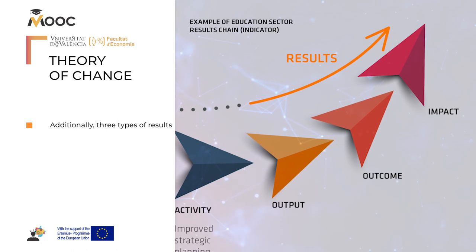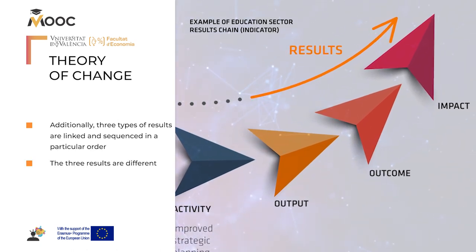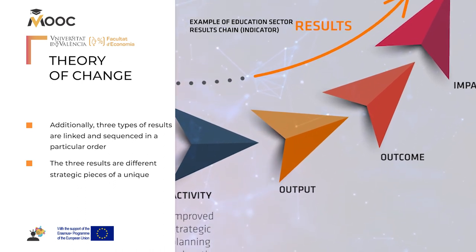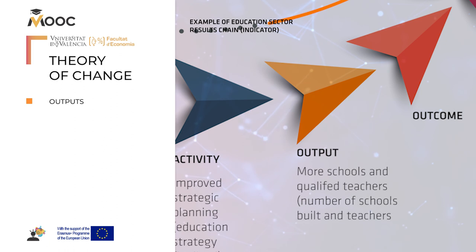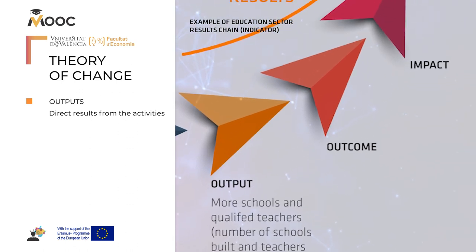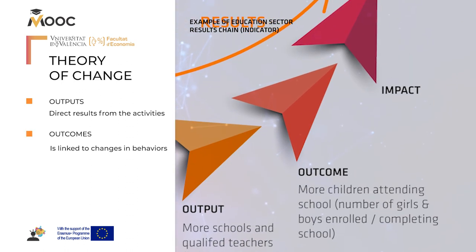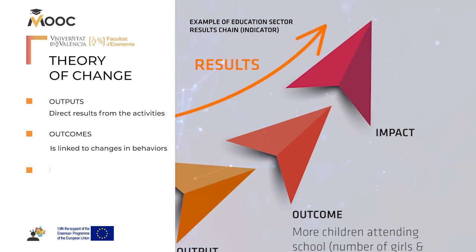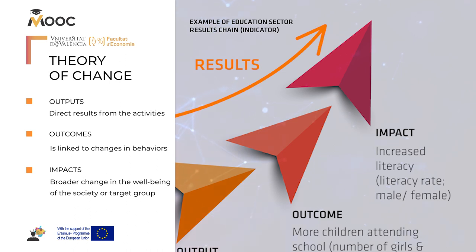Additionally, three types of results are linked and sequenced in a particular order. The three results are different strategic pieces of a unique project roadmap. The concept of outputs refers to the direct results from the activities, such as goods, services provided, and infrastructures. The concept of outcomes is linked to changes in behaviors. And the concept of impacts should be associated to a broader change in the well-being of the society or target group.